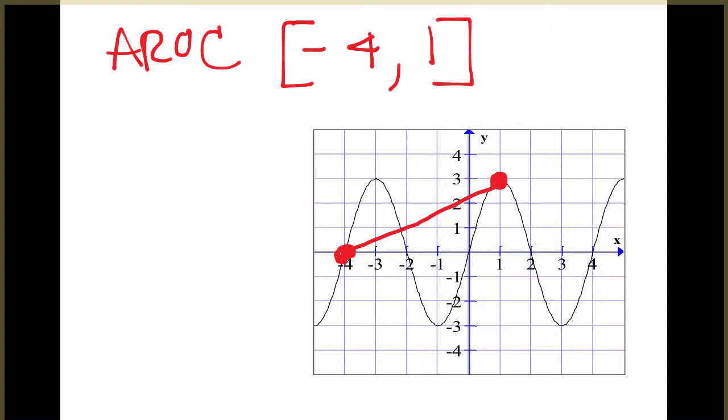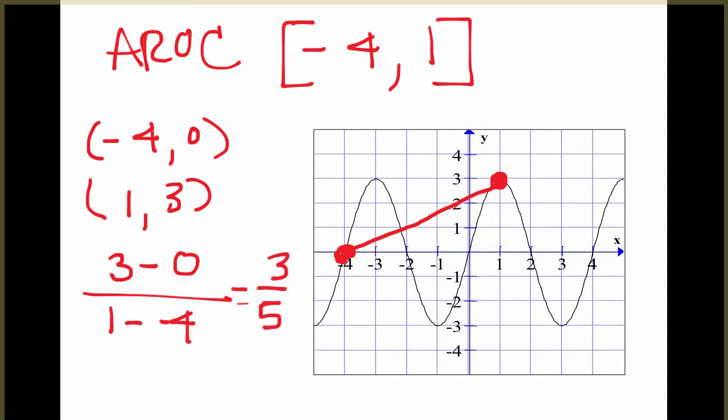On the graph, we're just looking at what the overall average change is. So here, if we wanted to find that average rate of change, we'd have our points negative 4, 0, and 1, 3, and you can use your slope formula again, the rise, or the change in our y's, over the run, the change in your x's, which gives us an average rate of change of 3 fifths.